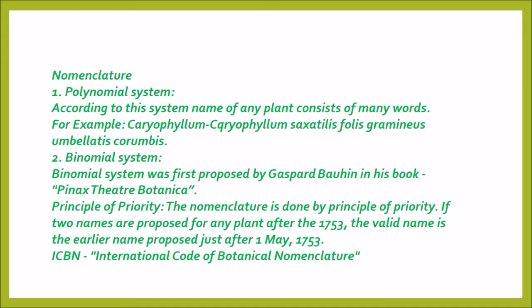Nomenclature systems: Polynomial system — according to this system, the name of any plant consists of many words. For example: Carophyllum, Cacophyllum, Saxotylic Polygrammicus, Avenid Metis Corumbus. All these names are called the polynomial system. Poly means many — simply a many-name system.